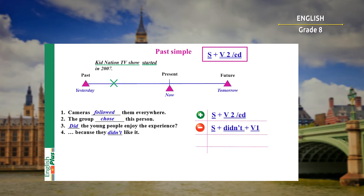Look please at sentence number three: Did the young people enjoy the experience? This is a question. So to make a question, we put 'did' before the subject, and then use the main verb in the first form. Did plus subject plus first form of the verb. Well done.